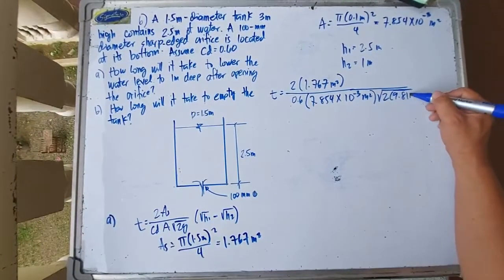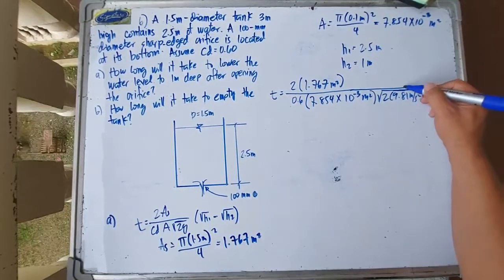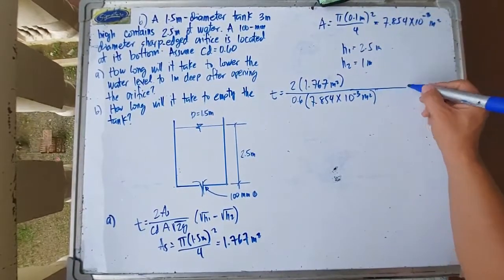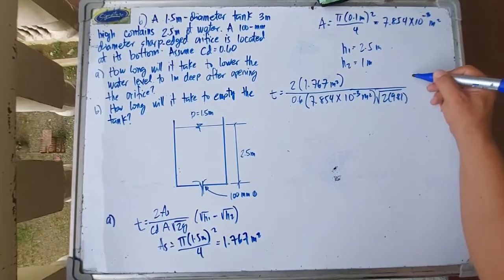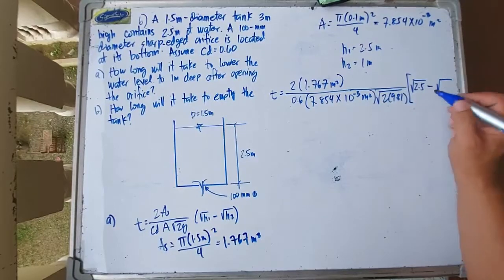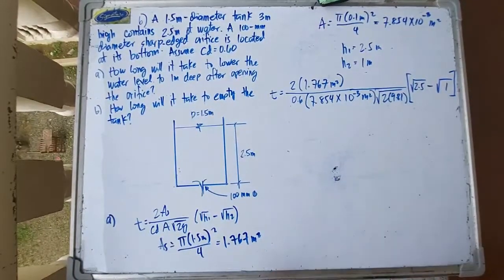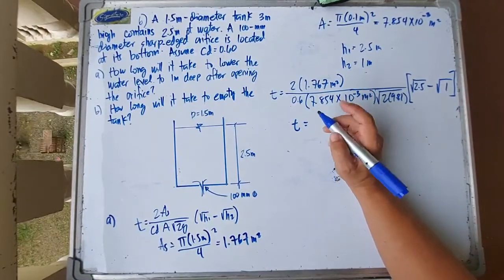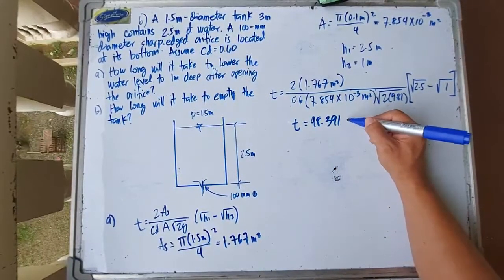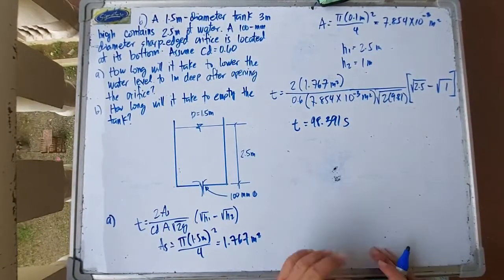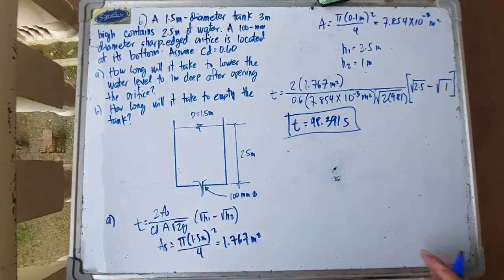Substituting into the formula: T equals (2 × 1.767) divided by (0.6 × 7.854 × 10⁻³ × square root of (2 × 9.81)) times (square root of 2.5 minus square root of 1). The result is T equals 98.391 seconds to lower the height from 2.5 to 1 meter.